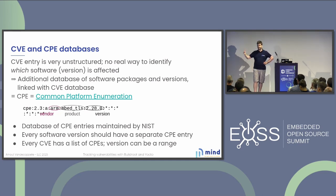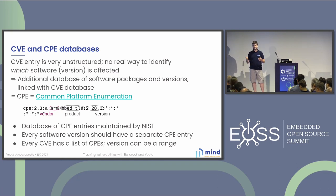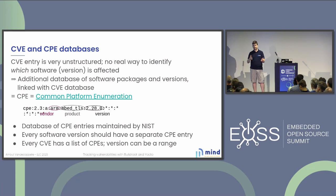These two are linked with each other — every CVE has a list of CPEs to which it applies. The original idea was that every time a vendor releases software, they create a CPE entry, which is added to the database. When a CVE is created, they enumerate all the versions to which it applies. It turned out that didn't work very well, so eventually they also came up with a way to specify a range of versions — basically greater-than and less-than — and then you can have several CPE entries to which the CVE applies.